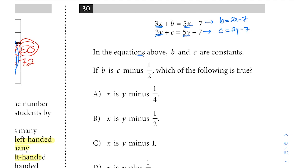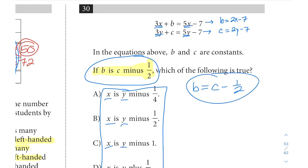In the equations above, b and c are constants. If b is c minus one half, so let's see if we can come up with an equation for this. B is, meaning equals, c minus one half. All of our answer choices here have some sort of relationship between x and y. Let's see if we could use a little bit of substitution to take this relationship of b and c and convert that into x and y.